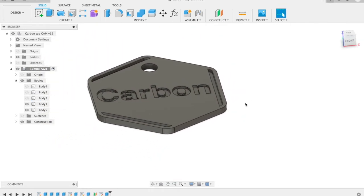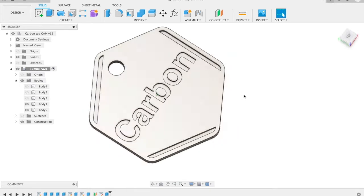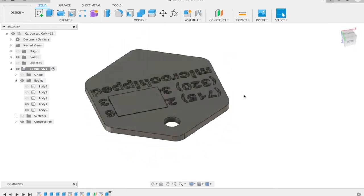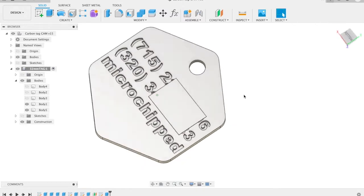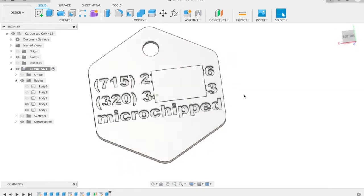The name on the front is fairly large, but there are three lines of text on the back side that are only 4 millimeters in height. The challenge is to machine both sides of the tag and keep everything lined up.